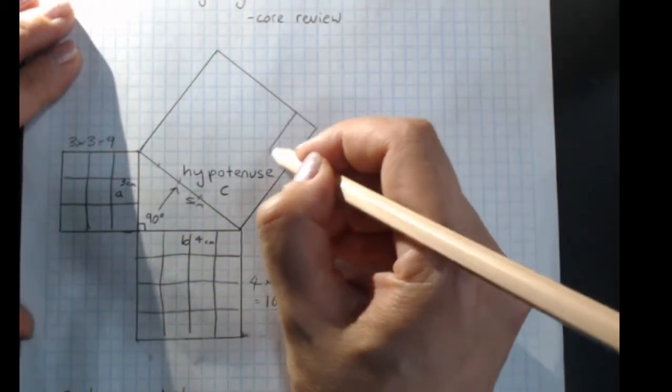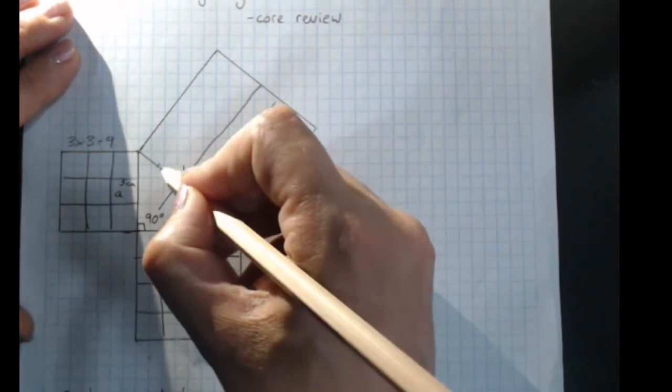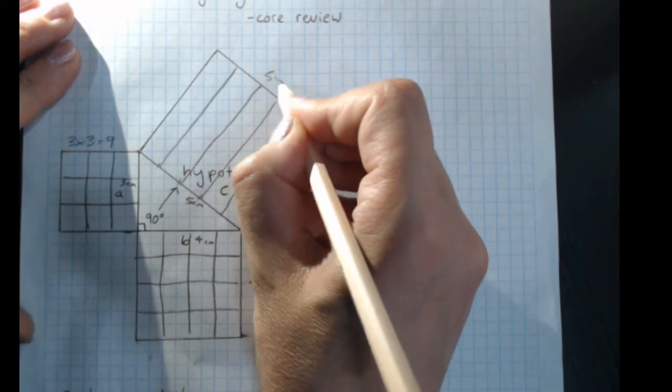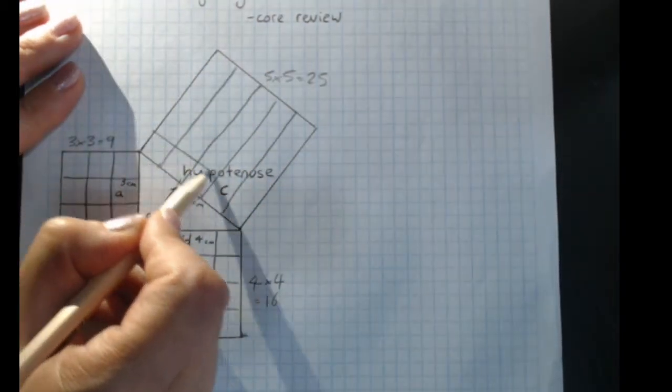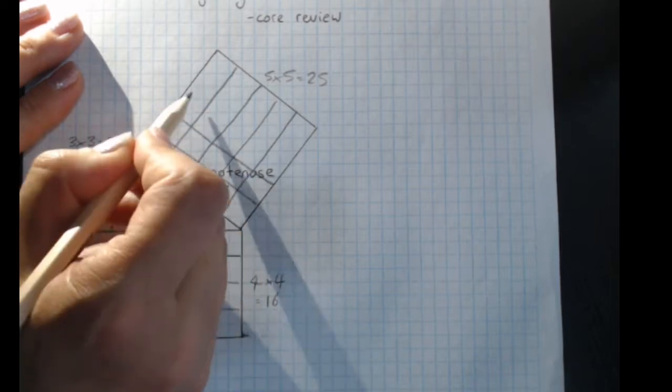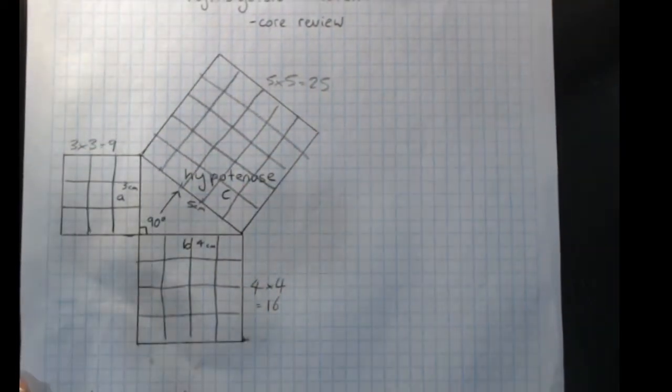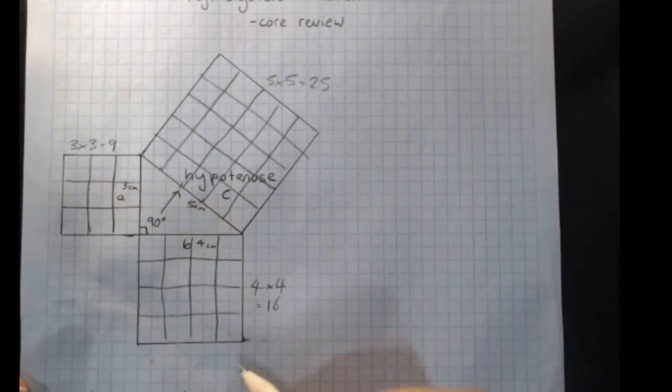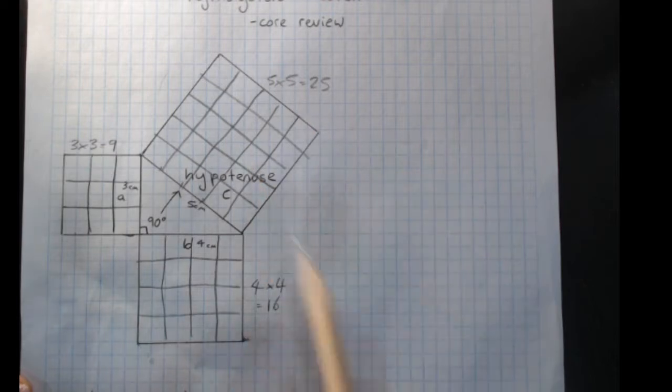And this one's a little trickier to divide up into squares, because it's on a diagonal. But if we did it, we'd discover that five times five is 25 squares. And there's definitely 25 centimetres squares in that. And these nine plus these 16 equals these 25.